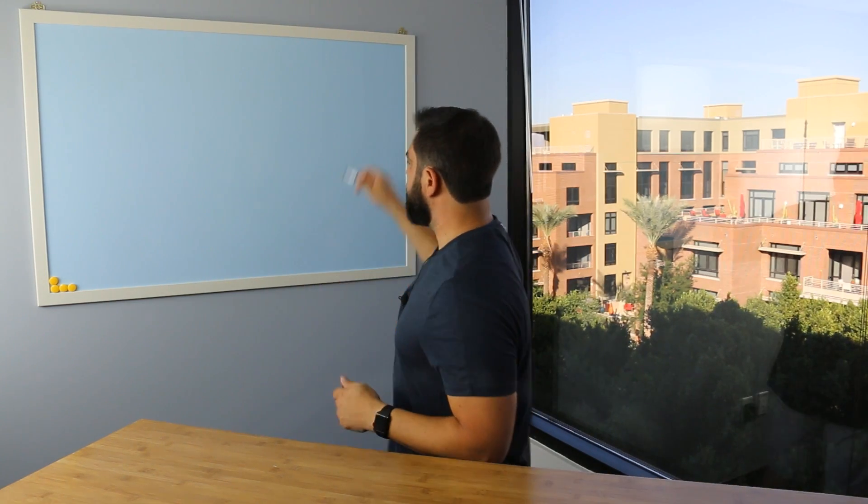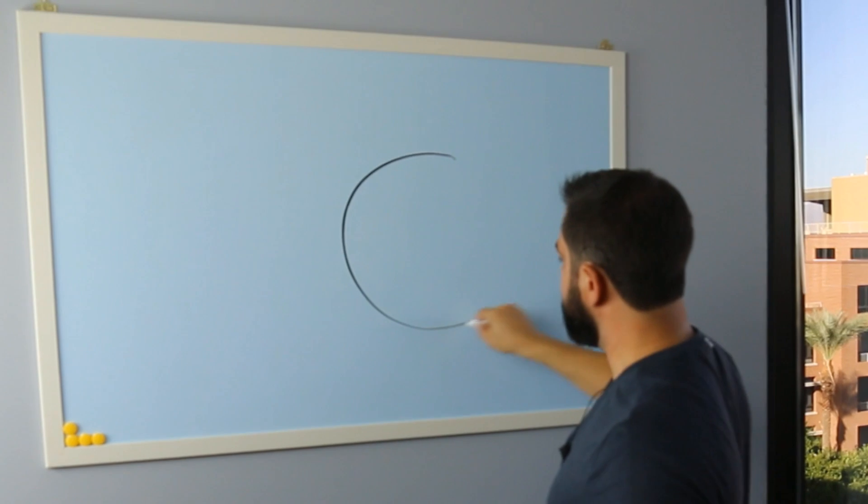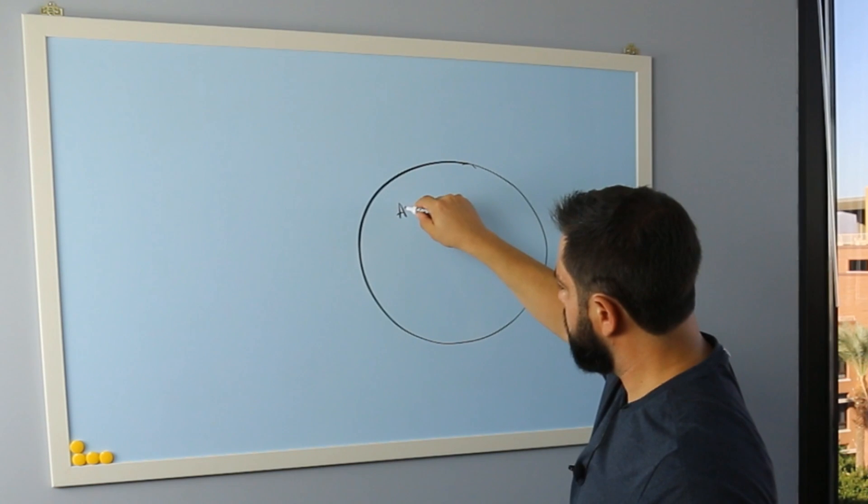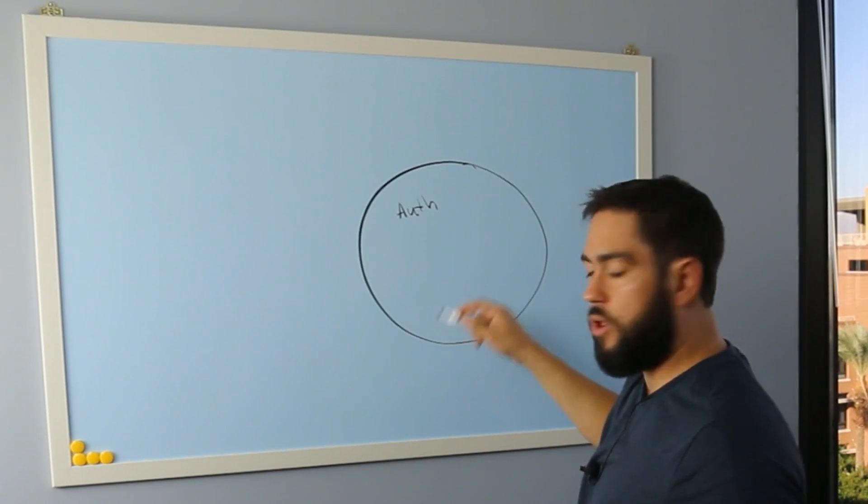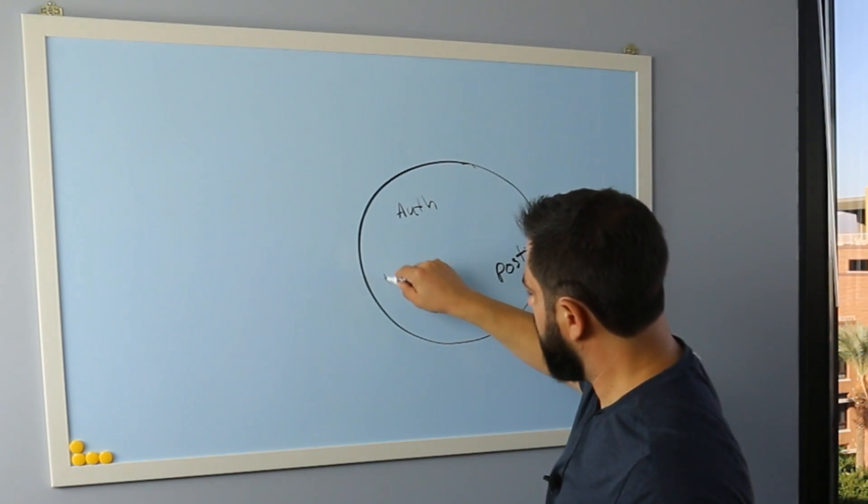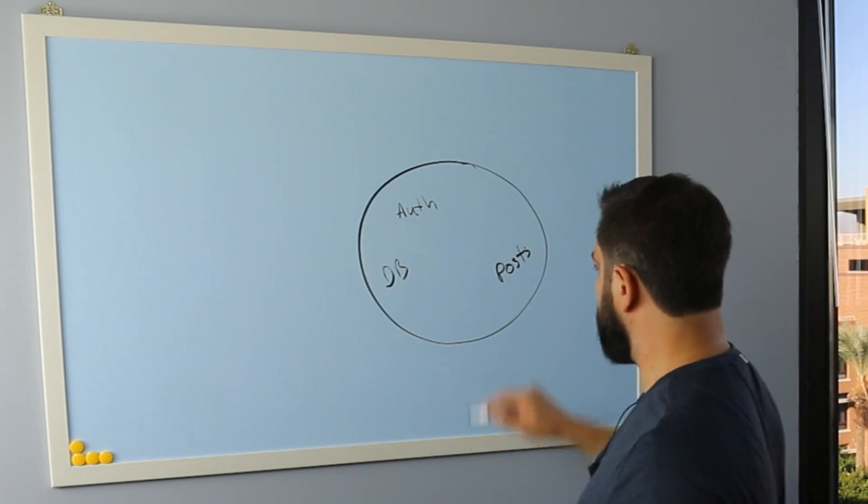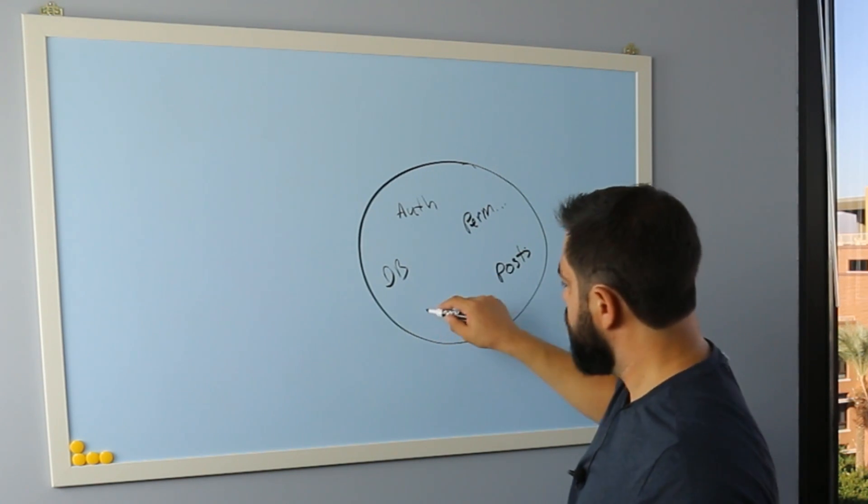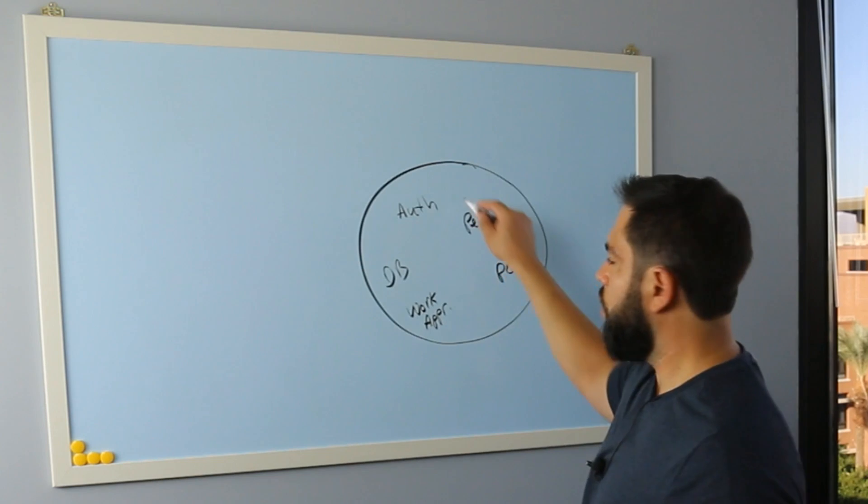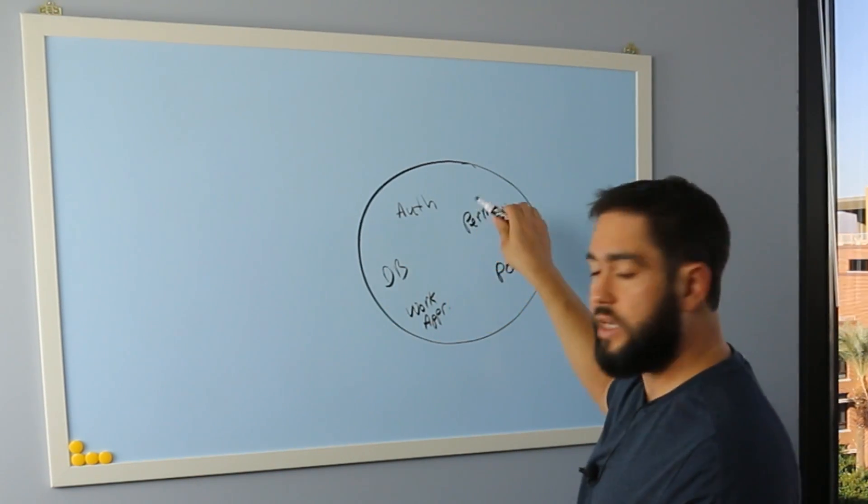To give a visual on how a monolithic application works, we have something like this. If we pretend that this big circle is an application, then we might have features like authentication, or if it's a blogging application, we might have a concept of posts and a database here, and a permission structure right here. We might have a workflow approval system for approving posts, all of that right here. And each one of these is in the same system.